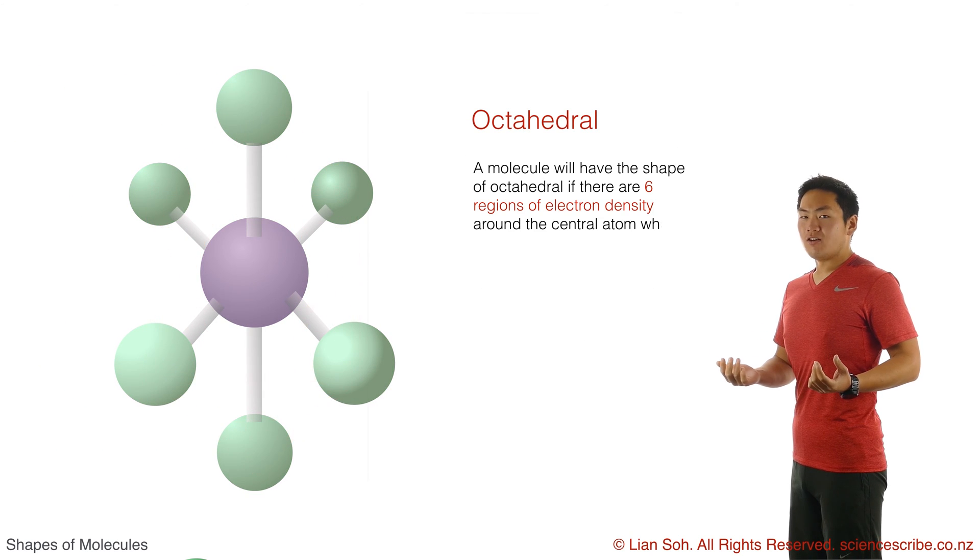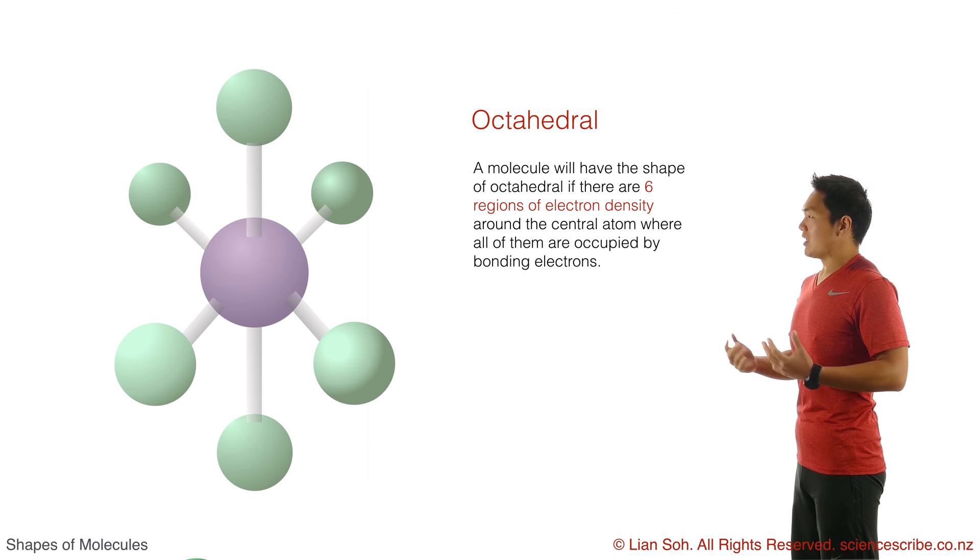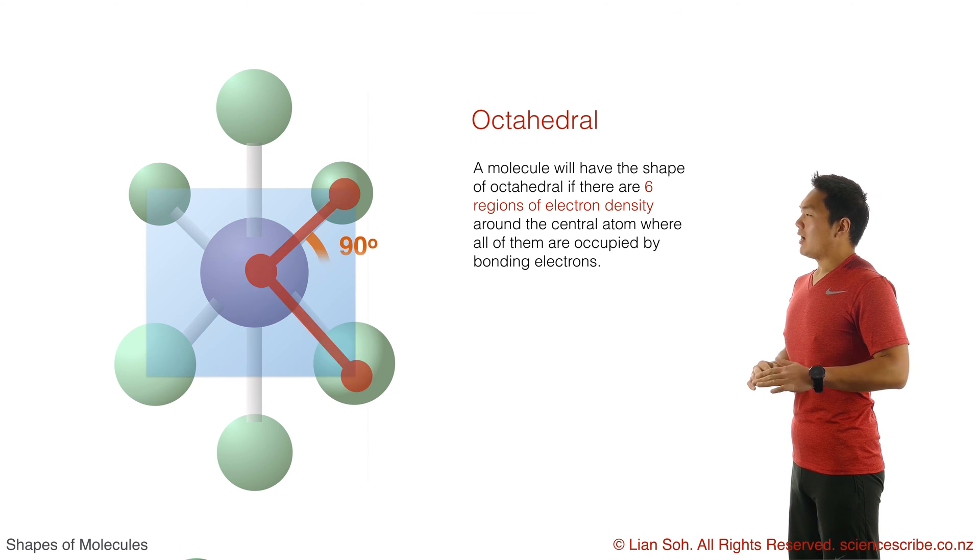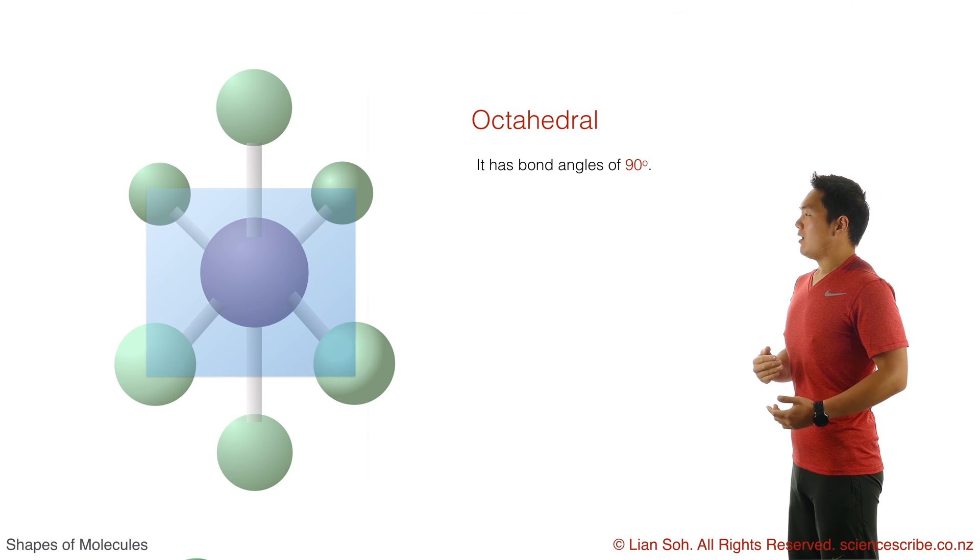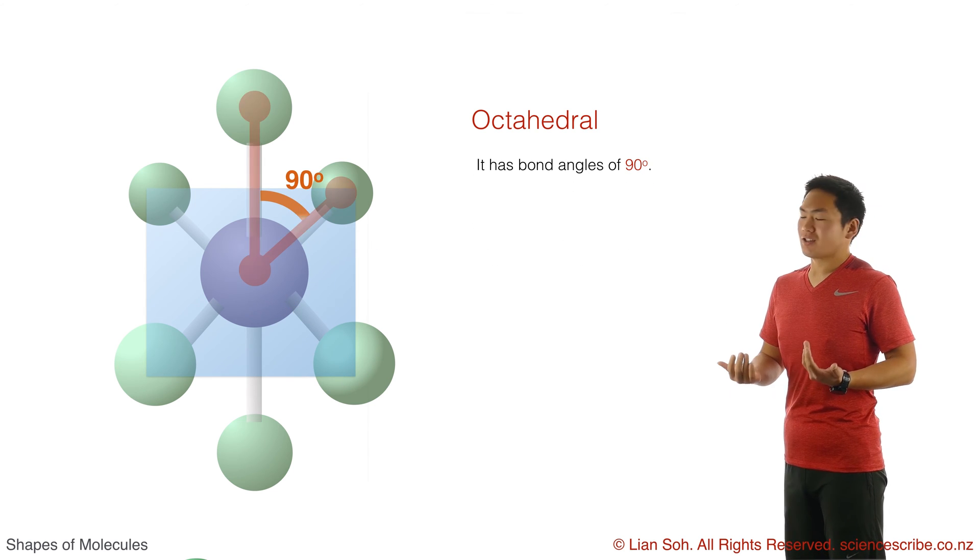As for these angles, well in the flat plane you've pretty much just got a square, so 90 degrees. And in the vertical part, well 90 degrees because it goes straight up and straight across as well.